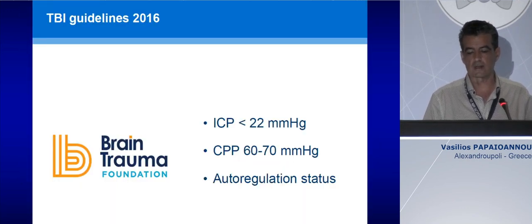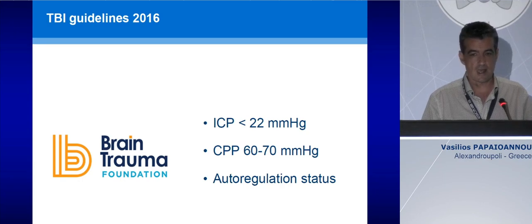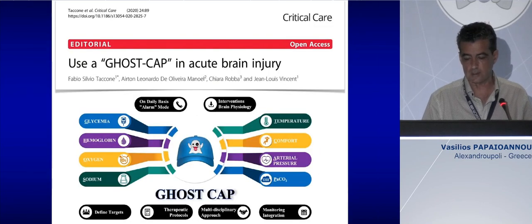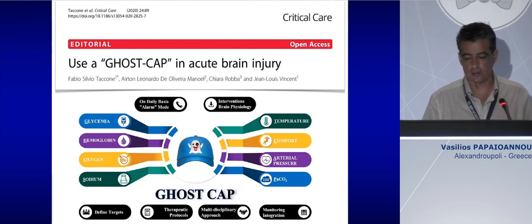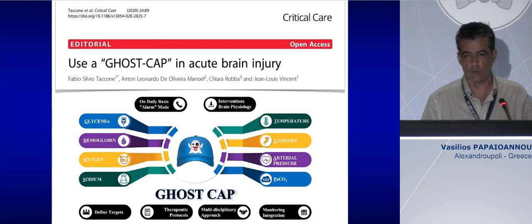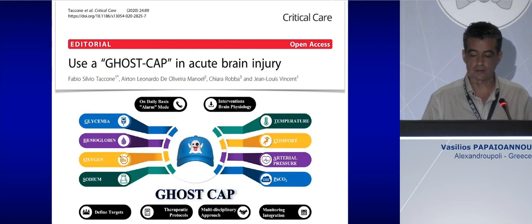The classic guidelines from 2016 have now been re-evaluated. They suggest an ICP less than 22 mmHg with a cerebral perfusion pressure of around 60–70 mmHg. The new information is to try to evaluate the autoregulation status of the patient, which requires particular software and algorithms. The autoregulation status is most significant in patients with brain trauma and increased ICP. I also remind you of the GHOST-CAP concept by Silvio Taccone, suggesting comprehensive monitoring of sodium, oxygen, hemoglobin, glycemia, PCO2, arterial pressure, temperature, and comfort.